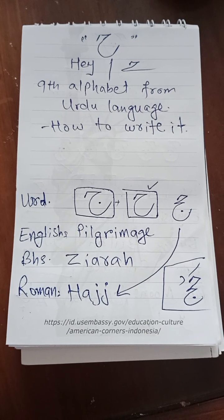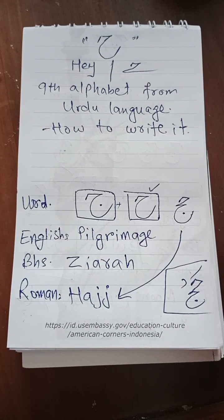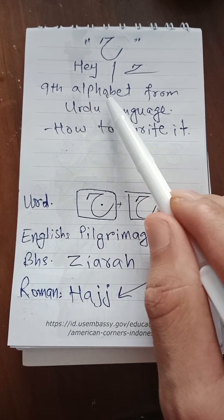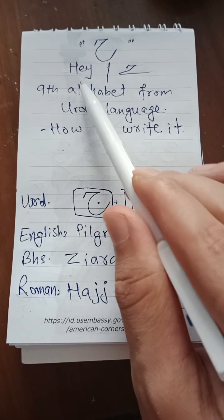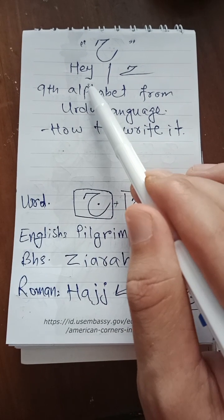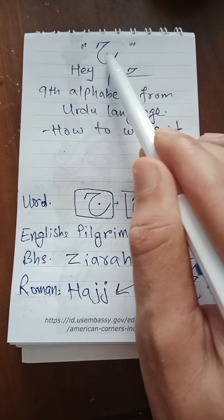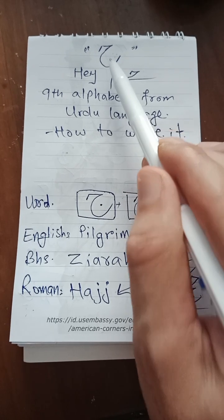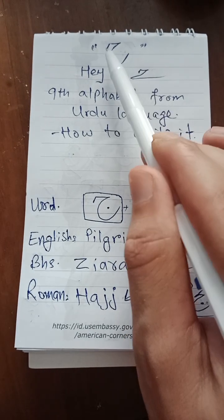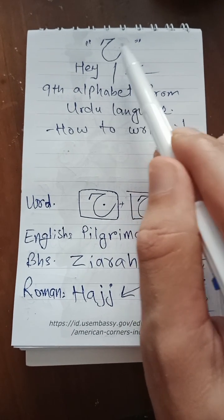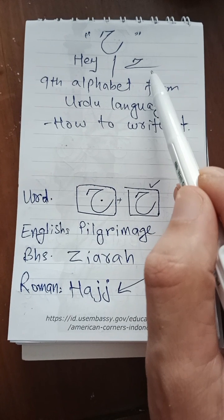Today we will learn the ninth alphabet from the Urdu language. In Arabic we call it 'ha', but in Urdu we call it 'he'. This is the pronunciation: he. We write it the same as jim and che, but there is no dot or point inside — it is simple.